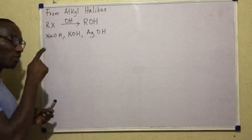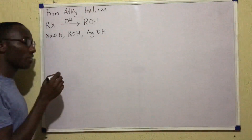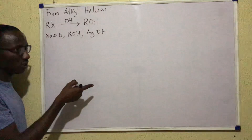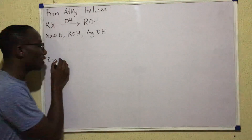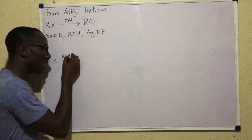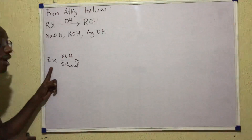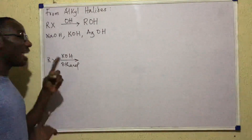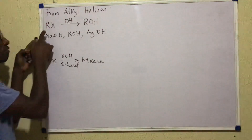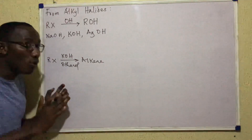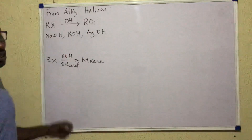Now interestingly, this resembles a reaction we saw under preparation of alkenes called dehydrohalogenation. If you have RX and it undergoes dehydrohalogenation, it would react with potassium hydroxide in the presence of ethanol — that gives an elimination reaction producing an alkene. But if RX is reacting with potassium hydroxide alone, what takes place is not elimination but substitution, so X goes away and is replaced by OH.